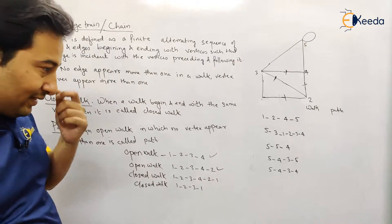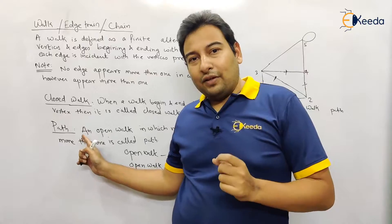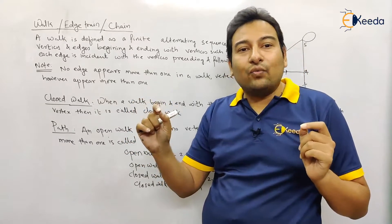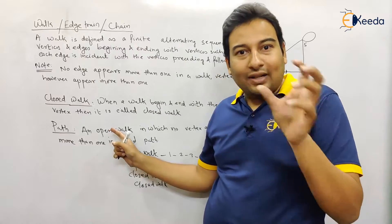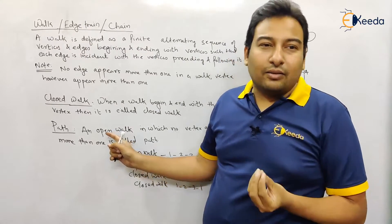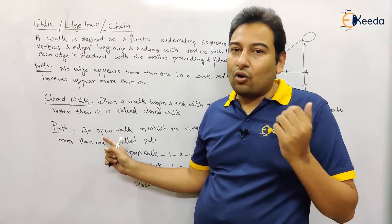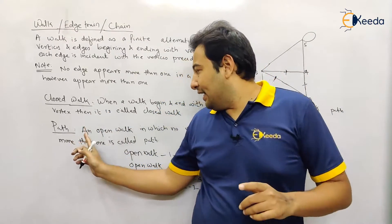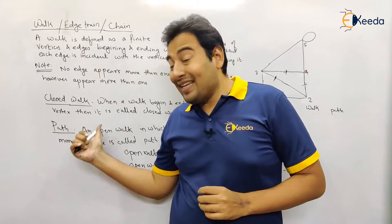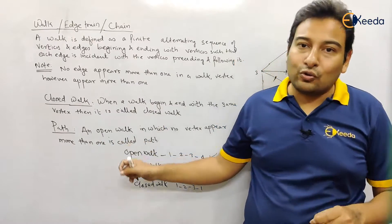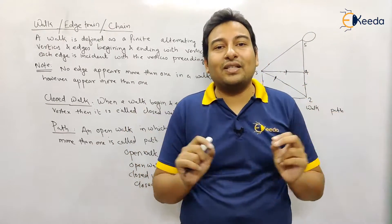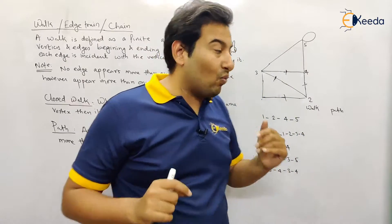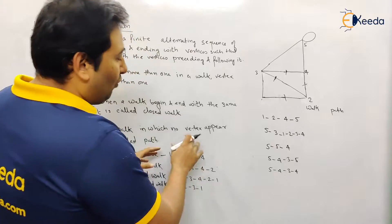Now let us discuss the next definition: path. First of all, a path must be an open walk — meaning the starting and ending vertex are different — and in the traversal, no vertex appears more than once. So in a path, there is a restriction on edges just like in a walk, but additionally there is also a restriction on vertices. Both edges and vertices must not be visited more than once.